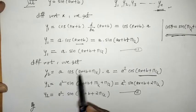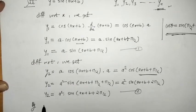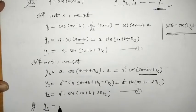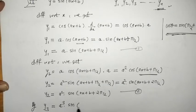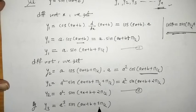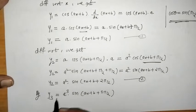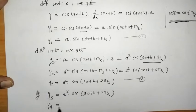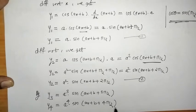By observing y1 and y2, we can say that y3 = a³·sin(ax + b + 3π/2). When we have y2, we write 2π/2; when we have y3, we write 3π/2. Similarly, differentiating y3 gives y4 = a⁴·sin(ax + b + 4π/2).